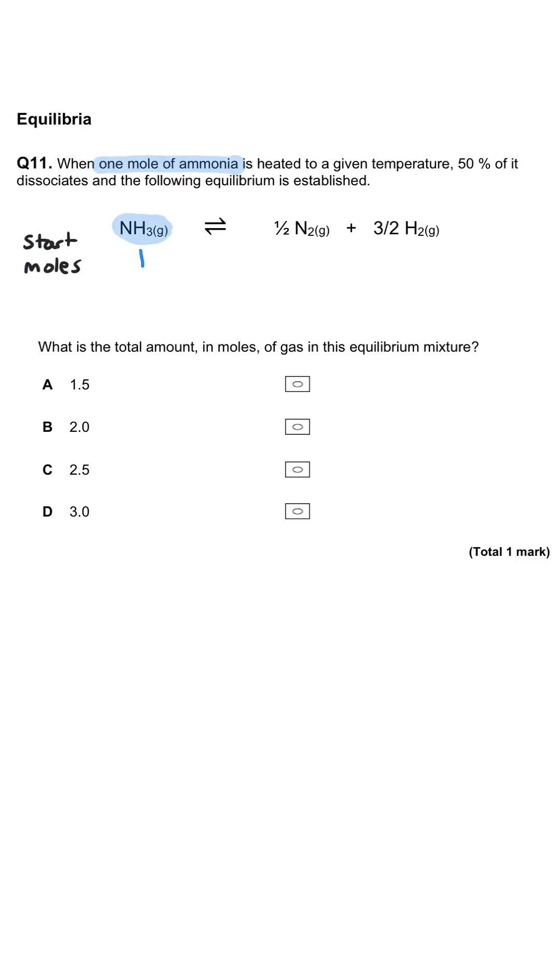When one mole of ammonia is heated to a given temperature, 50% of it dissociates and the following equilibrium is established. What is the total amount in moles of gas in this equilibrium mixture?